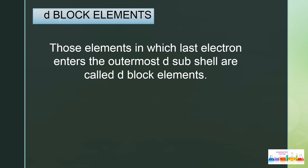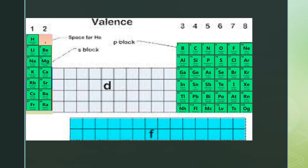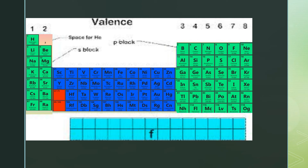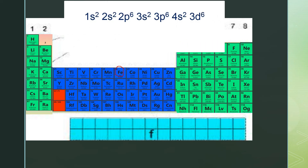D block elements are those elements in which the last electron enters the outermost D subshell. D block elements are transition elements which occupy the subgroup B positions. I am going to take the example of iron. Its electronic configuration is 1s² 2s² 2p⁶ 3s² 3p⁶ 4s² 3d⁶. The last six electrons are coming in the D subshell, which is why it is known as a D block element.